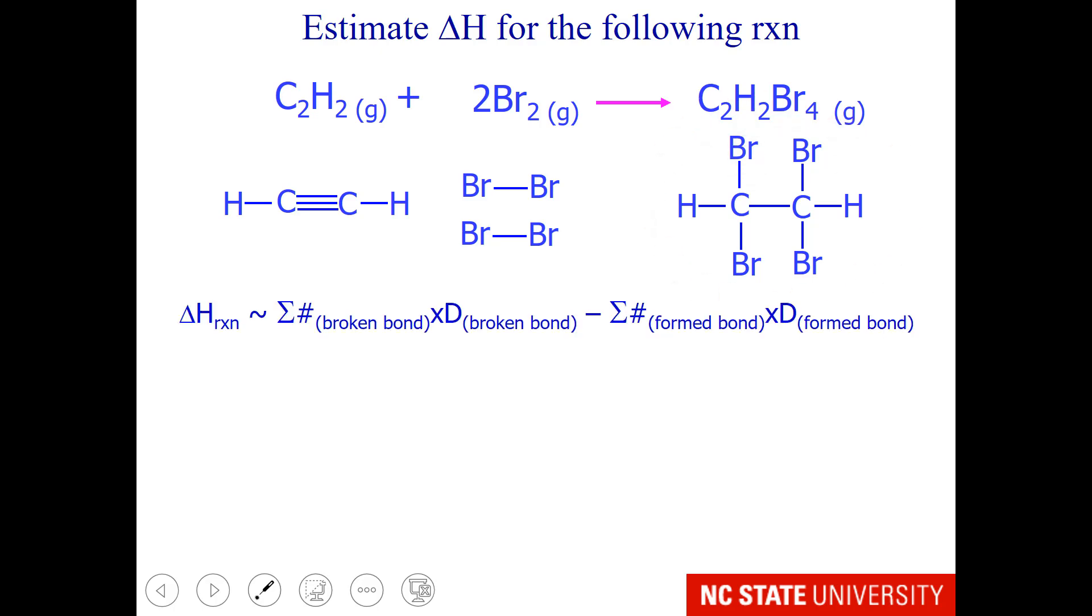Our formula that we'll be using is number of bonds broken times that bond energy minus number of bonds formed times that bond energy. And I suggest you write this down as bonds that are being broken and bonds that are being formed, and then substitute your values.